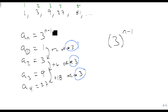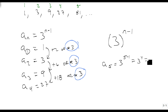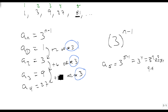Let's check that quickly. A sub 5 is 3 to the 5 minus 1, which is 3 to the 4th, which is 3 squared times 3 squared, which is 9 times 9, which is 81 — which is what we were expecting to see. So we found an apparent pattern by comparing the pieces and checked it against the sequence, using multiple pieces to make sure we got a constant pattern.